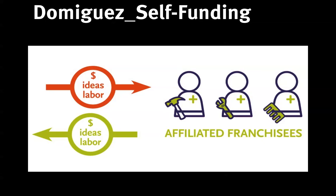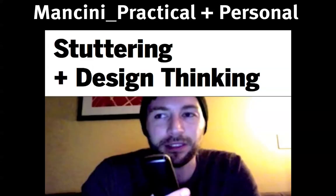Her project used design to create a methodology and business plan to elevate day laborers to a more professional and better-compensated status of vetted service worker franchisees. Finally, Ray Mancini devised a methodology for self-improvement among the 35 million worldwide adults — including himself — with speech disfluency, or as it is commonly called, stuttering.